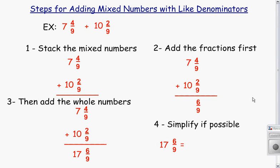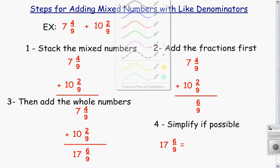Today, we're going to be learning about the steps for adding mixed numbers with like denominators. A mixed number is basically a whole number combined with a fraction.